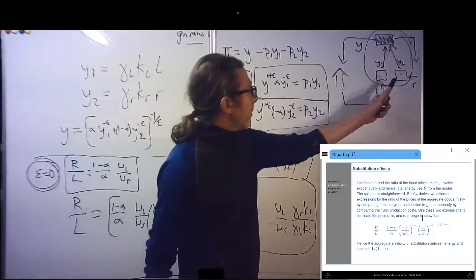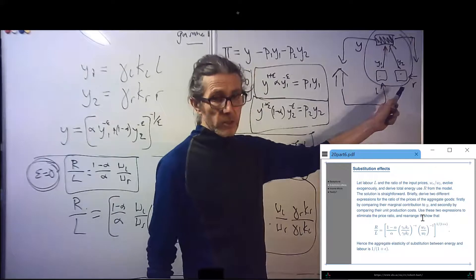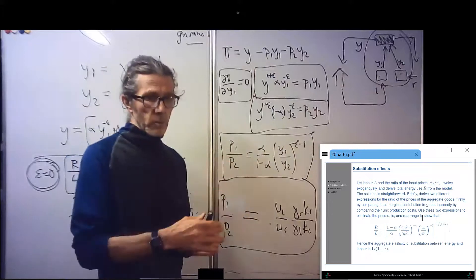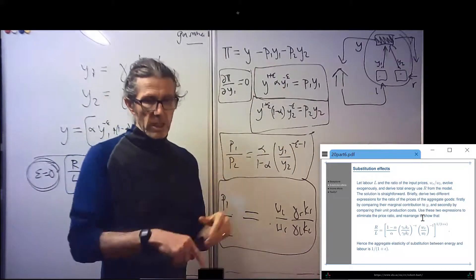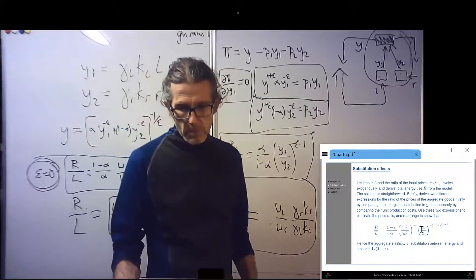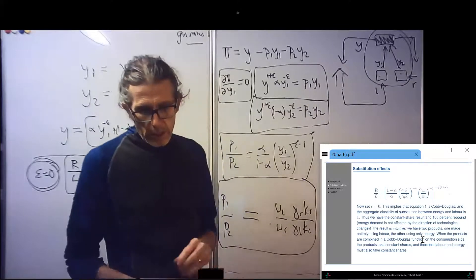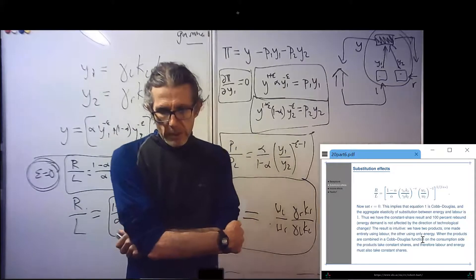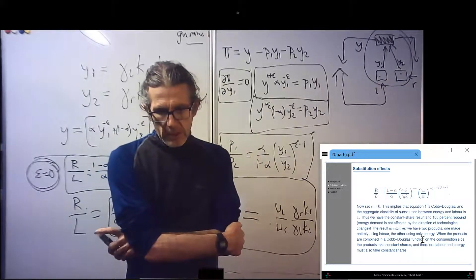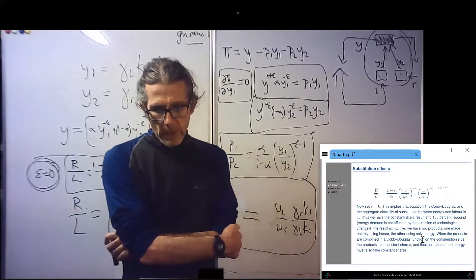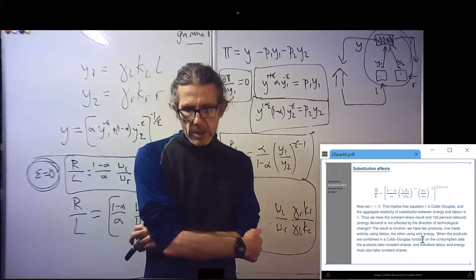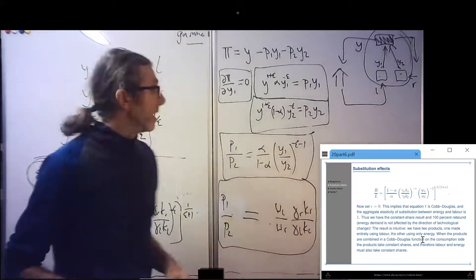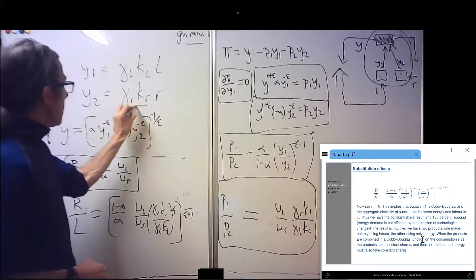But it's arising in quite a different way. The production function for the actual goods that are consumed are not Cobb-Douglas at all. But then it's all about the consumers' trade-off between the two goods and how they like a combination. Set epsilon equal to naught. This implies that equation one is Cobb-Douglas. The aggregate elasticity of substitution between energy and labor is one. Thus, we have the constant share result and a hundred percent rebound. Energy demand is not affected by the direction of technological change!